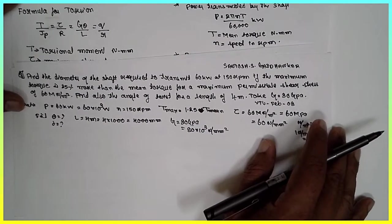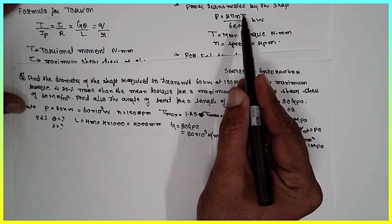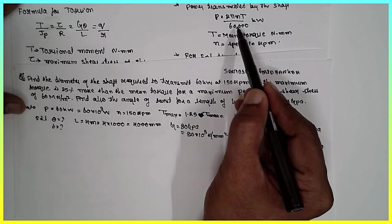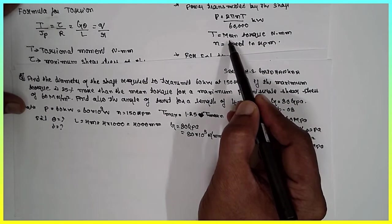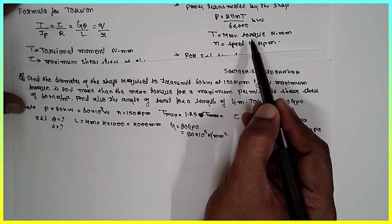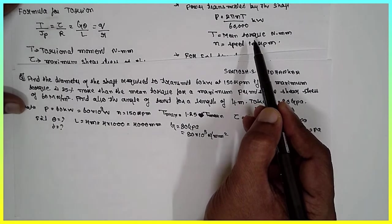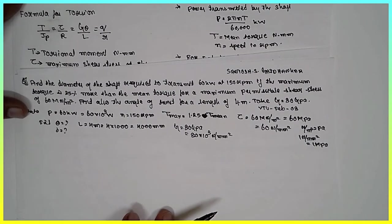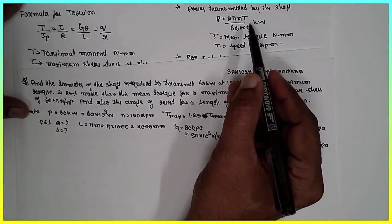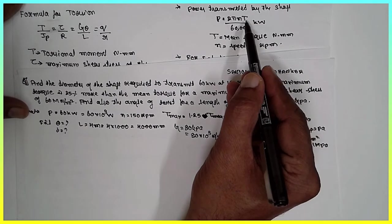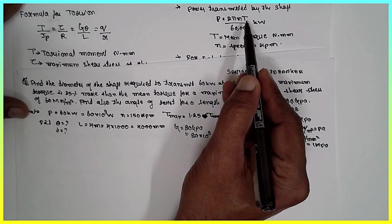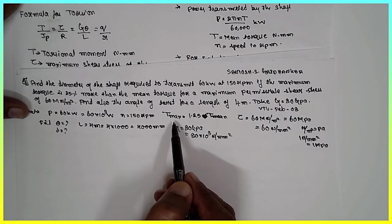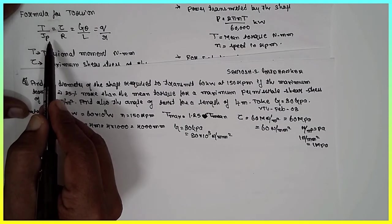Now, the condition is here. So, in the power, in place of T, we have to take a mean torque. This is the power formula: P equals 2 pi N T divided by 60,000, where T has to be substituted in terms of mean torque. Now here, we have to obtain the mean torque. That mean torque has to be substituted here in order to get T max. Once you get the T max, substitute in this formula in order to find out the diameter. Let us solve it.